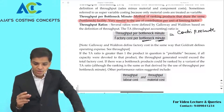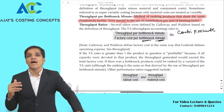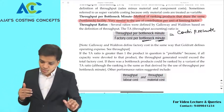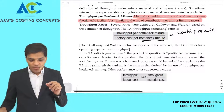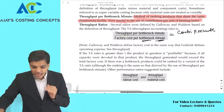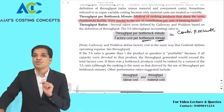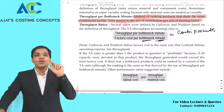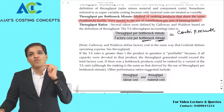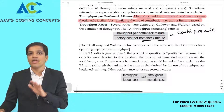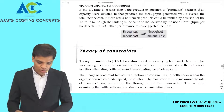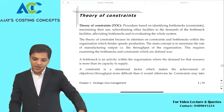If the throughput ratio is more than 1, your contribution is higher than factory cost per bottleneck minute — you should go ahead with production. If the ratio is less than 1, your cost is higher than contribution — you should stop production, because it will lead to a loss. This is throughput contribution — theory of constraint procedure based on identifying bottlenecks, maximizing their use, subordinating other facilities to bottleneck demand, altering bottlenecks, and re-evaluating the whole system.